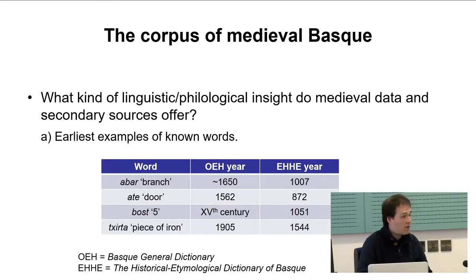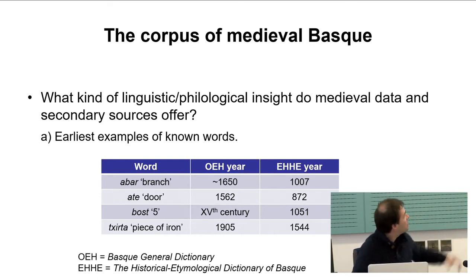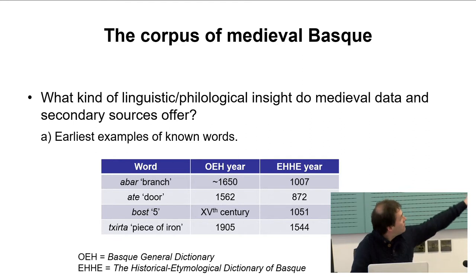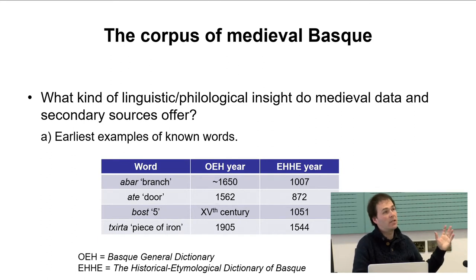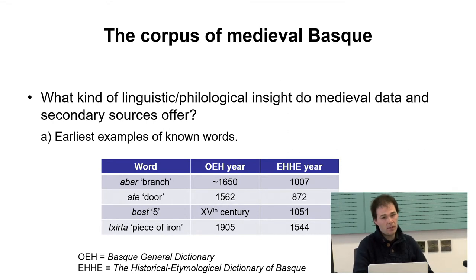As for the earliest attestations, I have organized in a table those words — chief, branch, door, five, and piece of iron. In the Basque dictionary which we are using up to now, we have those first attestation data, and for example in the case of 'branch' we can take the attestation back at least 600 years. So that's one of the good things about looking at medieval data.